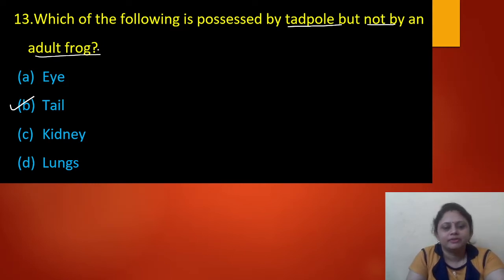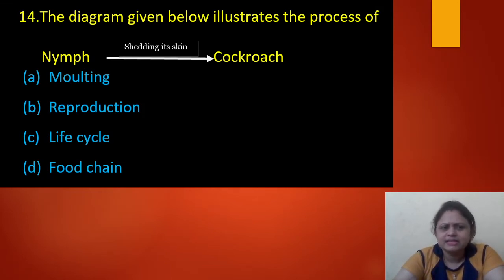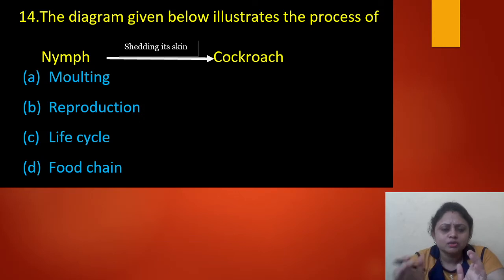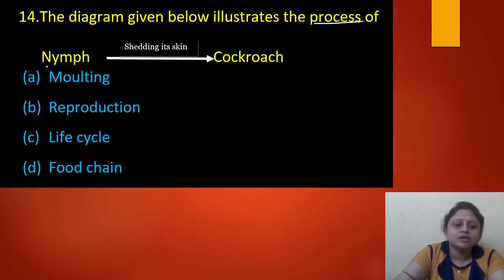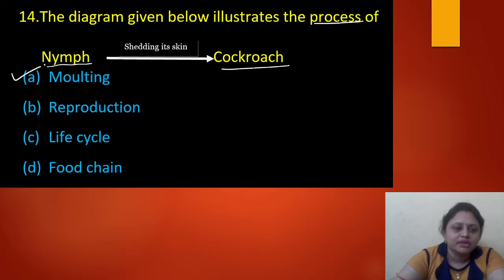Next question: the diagram illustrates the process of a nymph becoming a cockroach by shedding its skin. What is the name of this process? Option A: molting. Option B: reproduction. Option C: life cycle. Option D: metamorphosis. The name of the process in which a nymph is converted to a cockroach by shedding its skin is option A — molting.